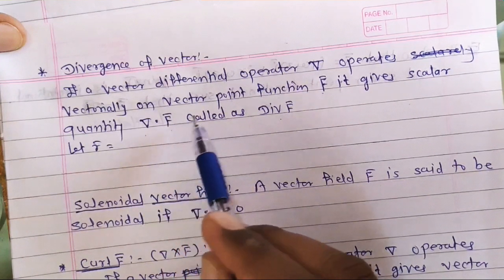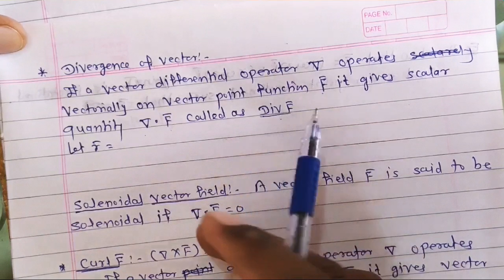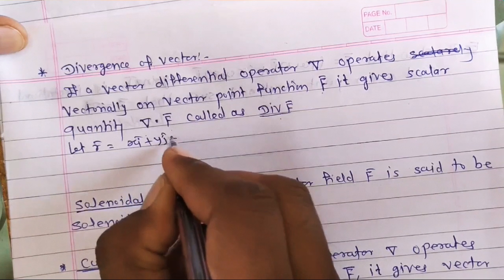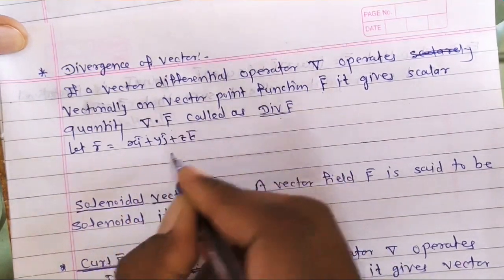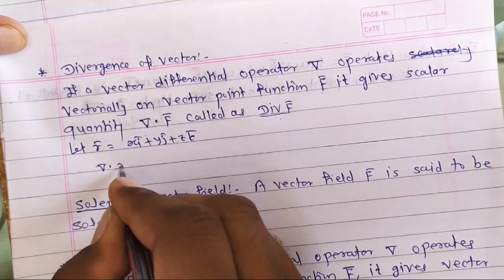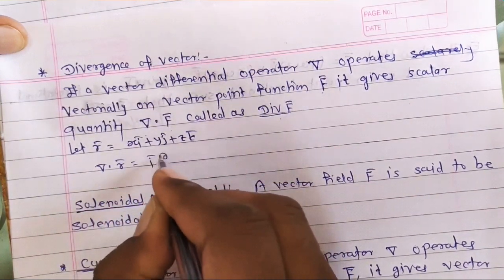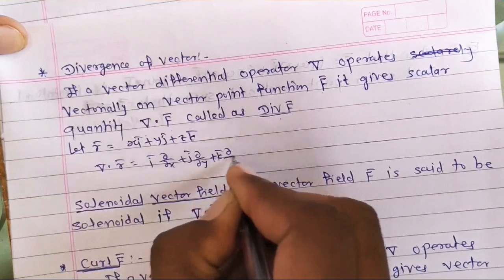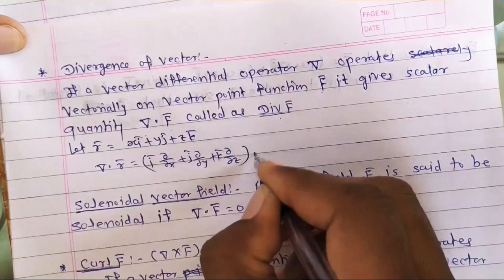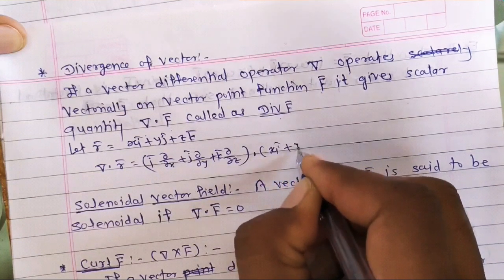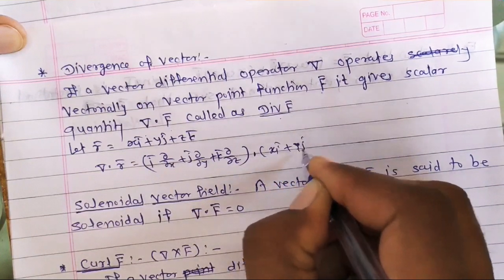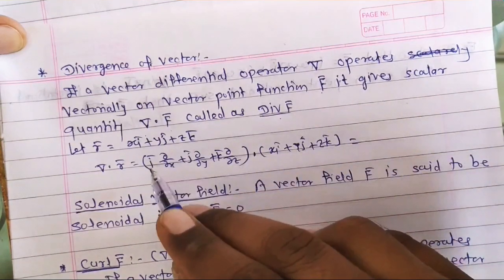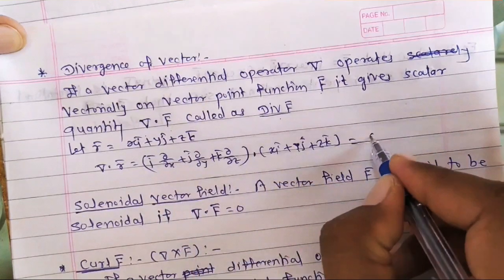Now suppose position vector r̄ is equal to x·ī + y·j̄ + z·k̄. Then we have to find divergence of r̄, that is del dot r̄. Del is defined as ī(∂/∂x) + j̄(∂/∂y) + k̄(∂/∂z), and r̄ is xī + yj̄ + zk̄. The dot product is computed as a₁b₁ + a₂b₂ + a₃b₃.